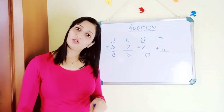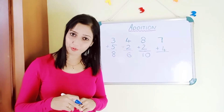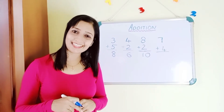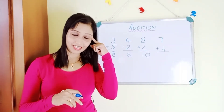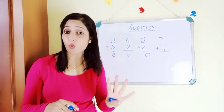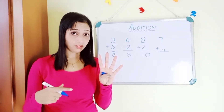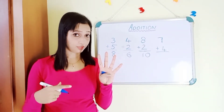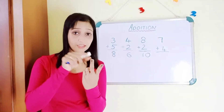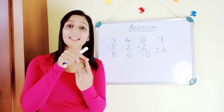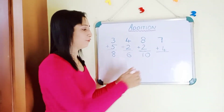Let's have one more example to be more clear: seven plus four. Which is the bigger number — seven or four? Seven. So you take seven in your mind and four in your hand. Count forward after seven: eight, nine, ten, eleven. The answer is eleven.